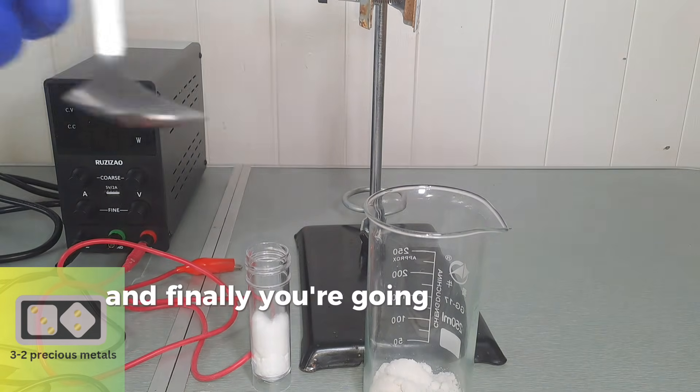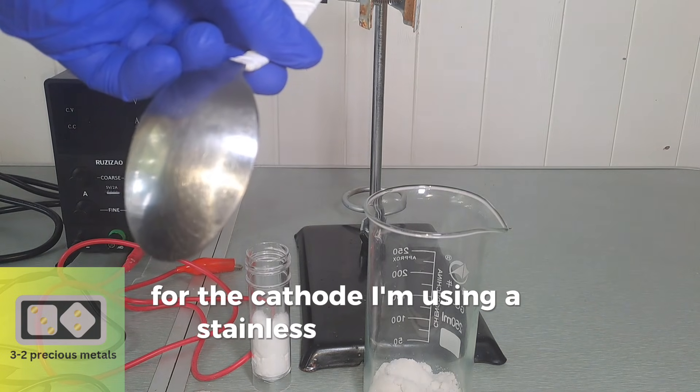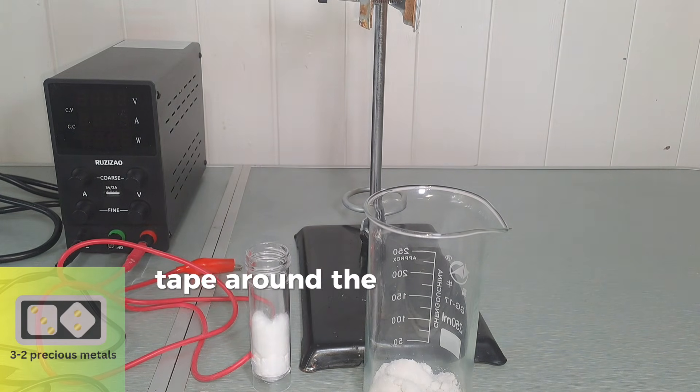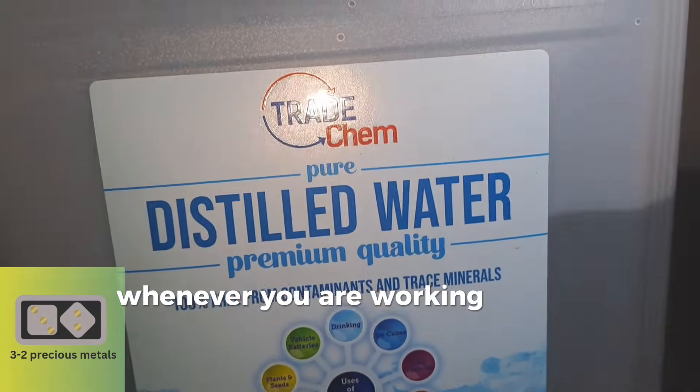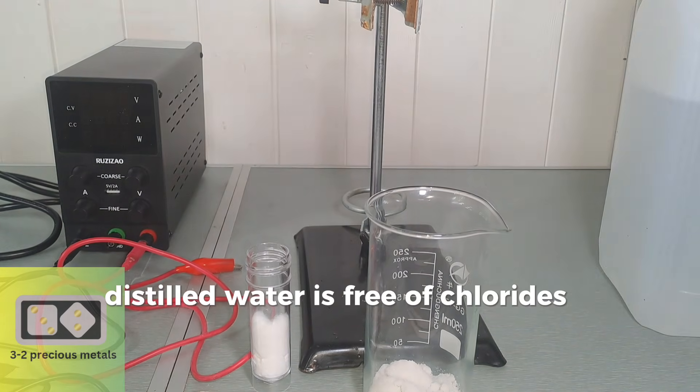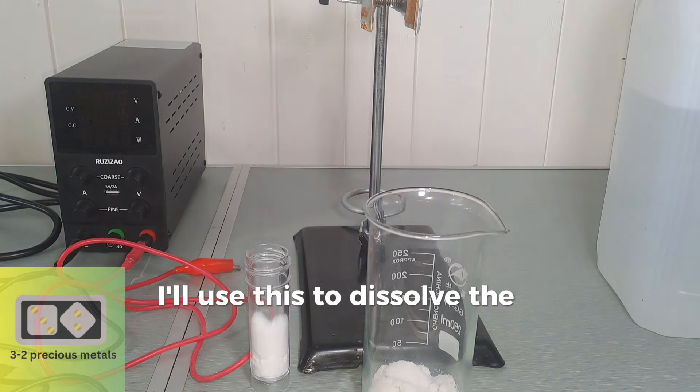And finally, you're going to need a cathode. For the cathode, I'm using a stainless steel spoon. I've wrapped some PTFE tape around the handle to prevent the crystals from growing up the handle. Whenever you are working with silver, it is important to use distilled water. Distilled water is free of chlorides, unlike tap water.